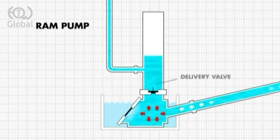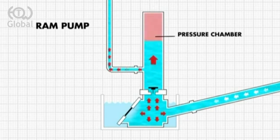The water then travels vertically through the pump body, opens the delivery valve, enters the pressure chamber and compresses the air in the column.